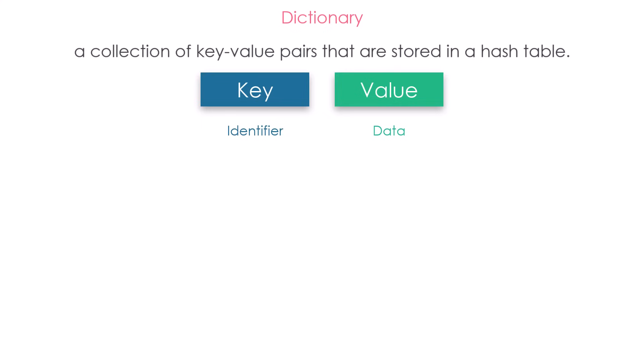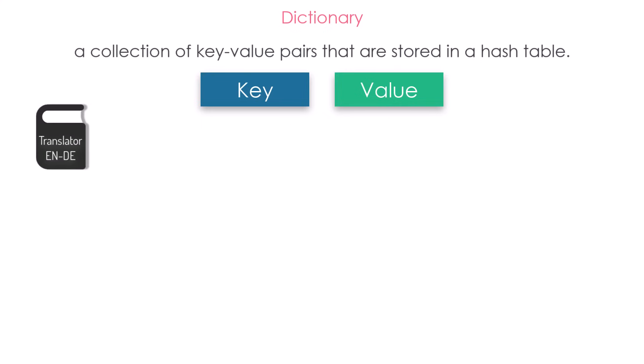In other words, dictionary acts like a translator — for example, an English-German translator. We have the words in English and the translation in German. The English word is the key, and the German translation is the value. This means I should know the English words I want to translate — these are the keys. And using these keys I will get the translation, the value. This is what a dictionary in general means.